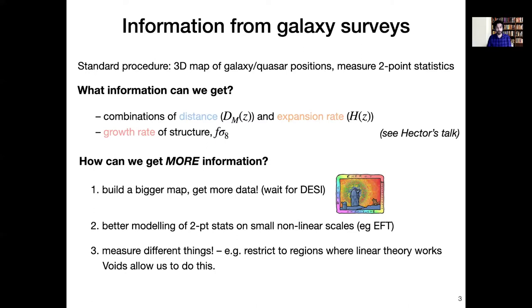I'm going to talk about the third approach, which is essentially to measure something different using the same data. So specifically in this talk, I'm going to be talking about restricting ourselves to regions where linear theory works better, and then only using linear theory. So it's kind of complementary to the EFT approach, and we're going to do this by using voids.